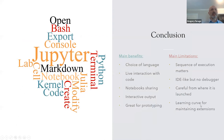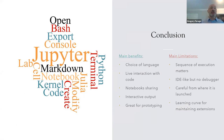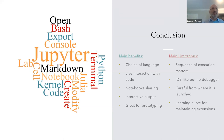The other limitation concerns extensions: when Jupyter has an upgrade, it doesn't mean the extension you were using will have its update ready at the same time. Sometimes there is a lag of one to two months or a few weeks. I want to thank you all for listening, and I encourage you to go ahead and explore Jupyter. We'll post all the resources on GitHub, and we're ready to take any questions.